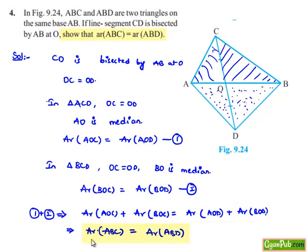Therefore, area of triangle ABC is equal to area of triangle AOD plus area of triangle BOD, which together form the complete area of triangle ABD. Finally, we have proved that area of triangle ABC is equal to area of triangle ABD. This is the required proof.